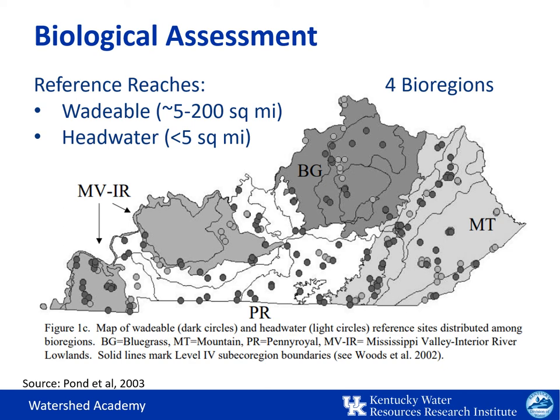It's important to compare the biotic index you calculated for your site to the correct bioregion scale on the integrity rating chart. The chart is divided into eight different sections, including the four bioregions and two different size classes: wadeable and headwater. The scales are adjusted for variances in the actual biological communities found in each bioregion. For example, if your biological sample is collected from a site in the mountains but you accidentally compare it to the integrity rating for the bluegrass, you can misinterpret the integrity rating as good when in reality, for the mountains, it's only fair.